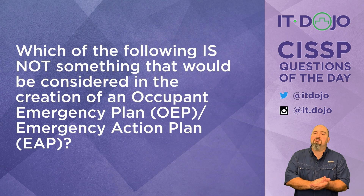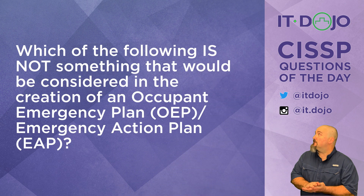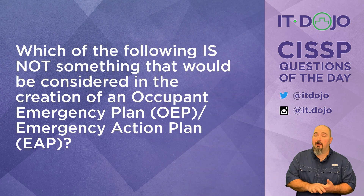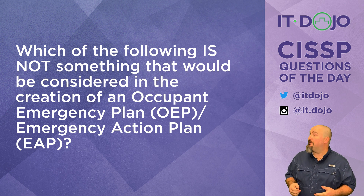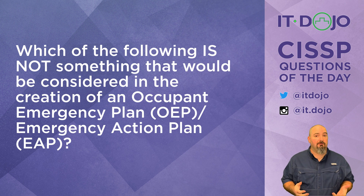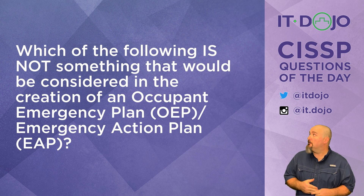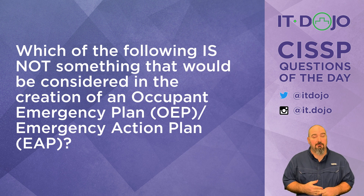Question number one today is: which of the following is not something that would be considered when planning an occupant emergency plan or an emergency action plan?